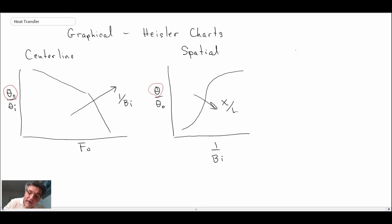And then finally you can use charts to get the heat loss, and this is plotted as a function of the Fourier number times the Biot number squared. And then these charts will be plotted for different Biot numbers.